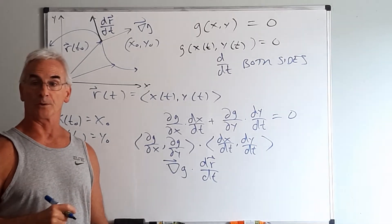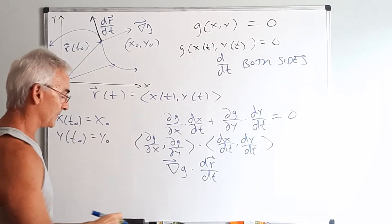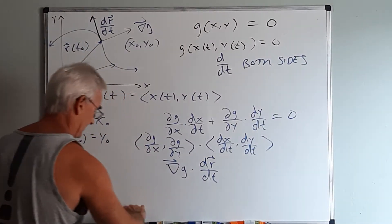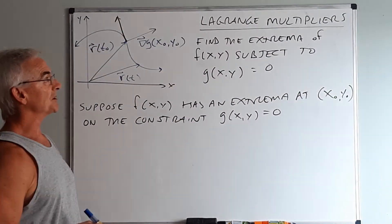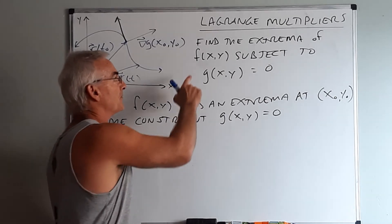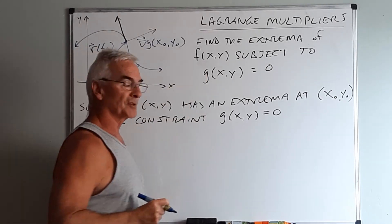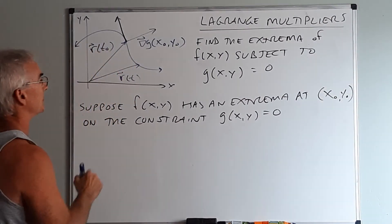It turns out the same thing is true in three dimensions if I used a level surface. So now we're going to define a very big concept next. We now want to introduce the concept of a Lagrange multiplier. We want to find the extreme of some function f of x, y subject to the constraint that we were dealing with before.